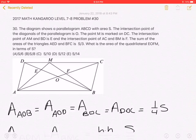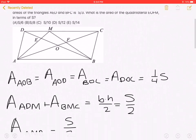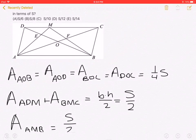Because O is the intersection of the diagonals of the parallelogram, area of AOB is equal with the area of AOD, is equal with the area of BOC, is equal with the area of DOC, and is 1 fourth S.